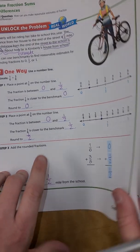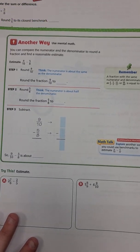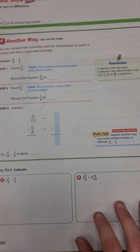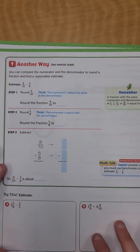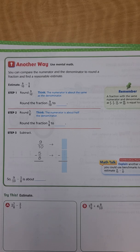Let's look at another problem on the back — this is mental math, which is most of the time what you're going to do, because you're not always going to have a number line. You can compare the numerator and the denominator to round a fraction and find a reasonable estimate. Our problem is to estimate 9/10 minus 5/8.